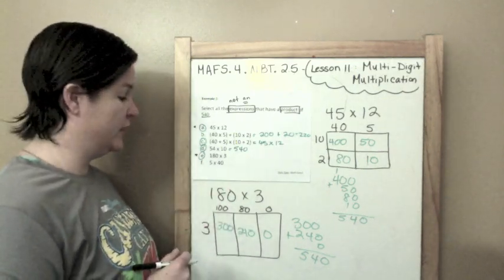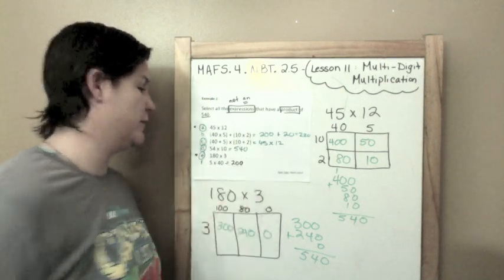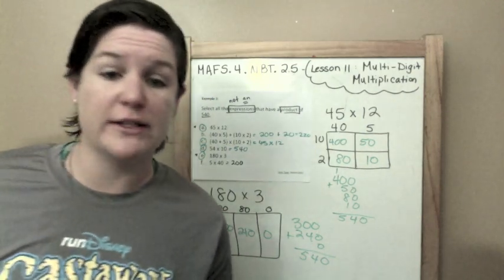And then finally, F, 4 times 5 times 40 would be 20 with a 0. That's not what we want. So A, C, D, and E are the correct answers.